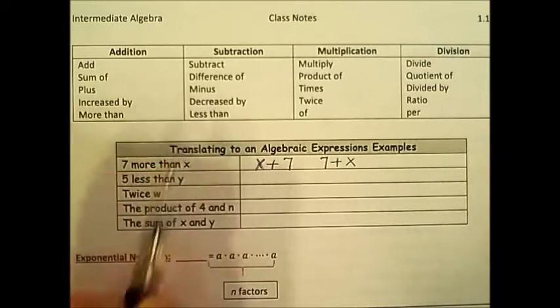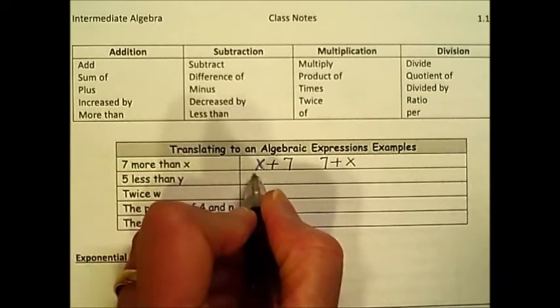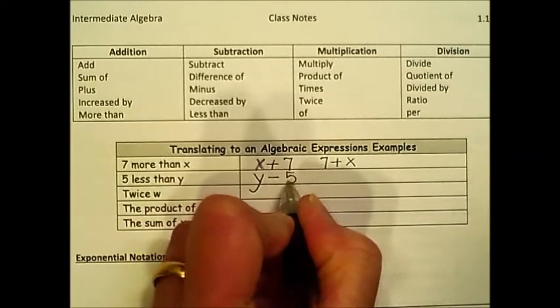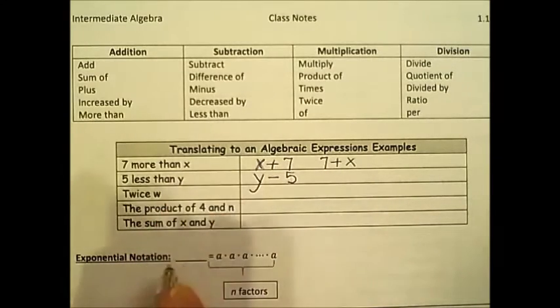5 less than y, it's a less than, which indicates a subtraction. And subtraction, just like division, order is important, 5 less than y.